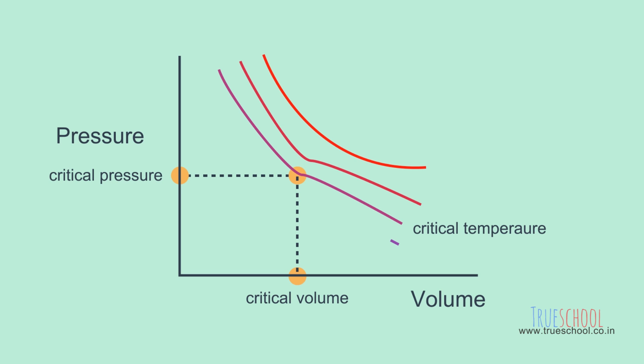At even lower temperatures isotherm it requires less pressure for the condensation to start. At this point, unlike critical point, the whole gas does not get condensed altogether but it enters a two-phase region.